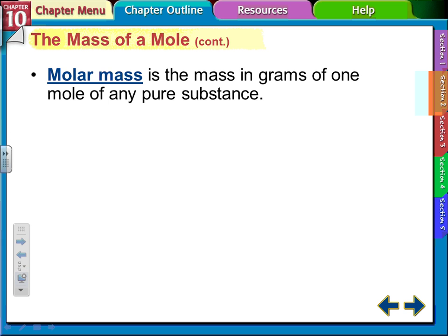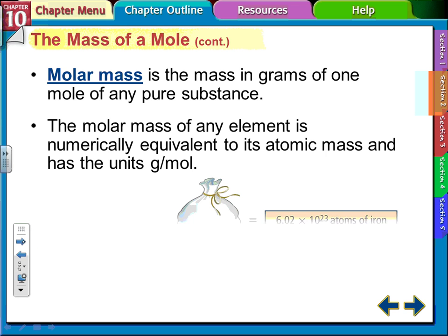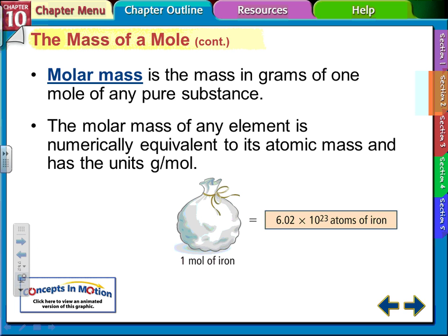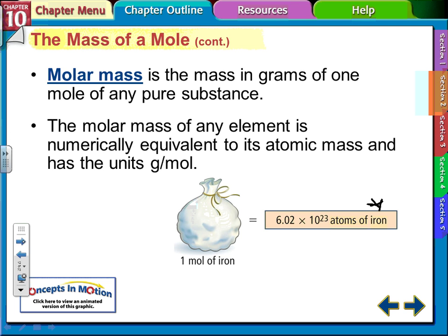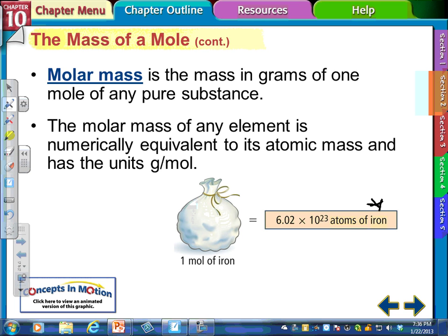Molar mass is the mass in grams of one mole of any pure substance. When you have 6.02 times 10 to the 23rd atoms or compounds, it's equal to its atomic mass. We get the atomic mass from the periodic table. Whatever the atomic mass number is on the periodic table, that's how much one mole of that substance weighs in grams.